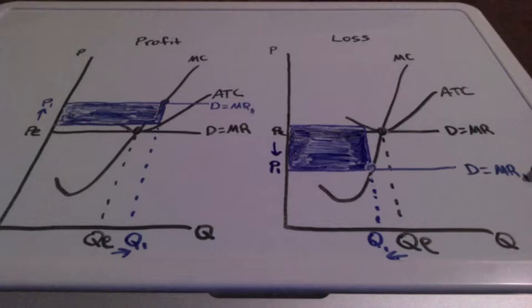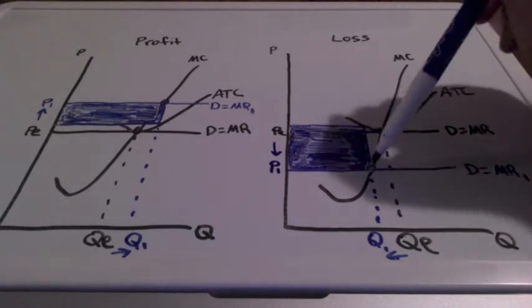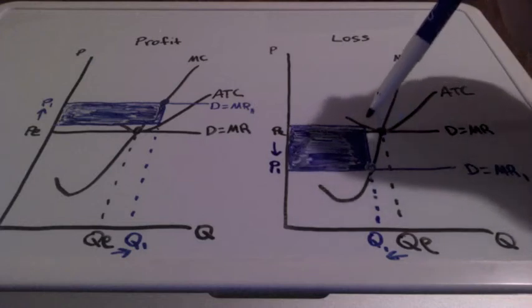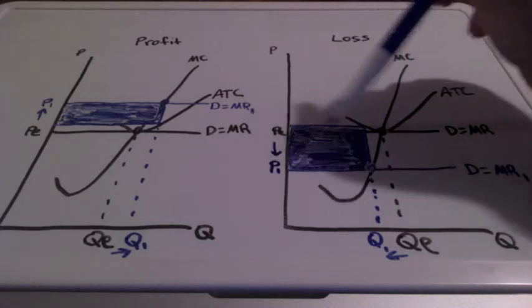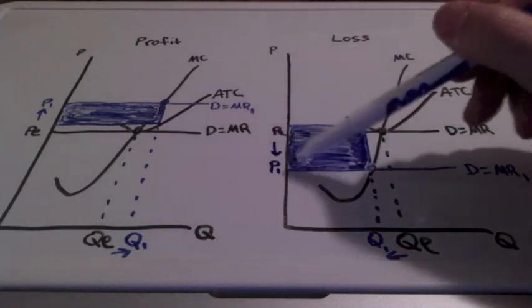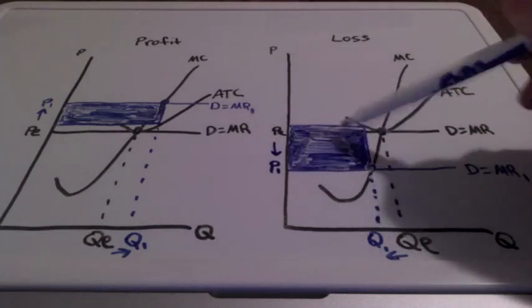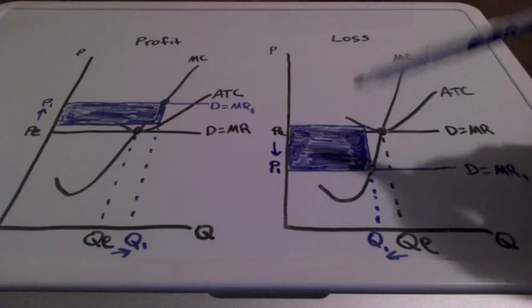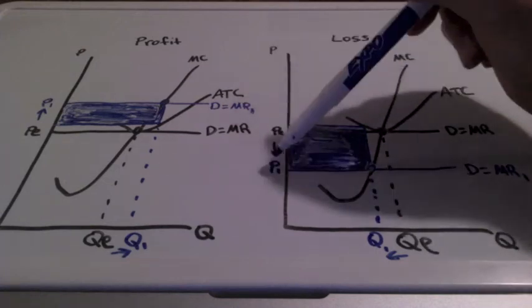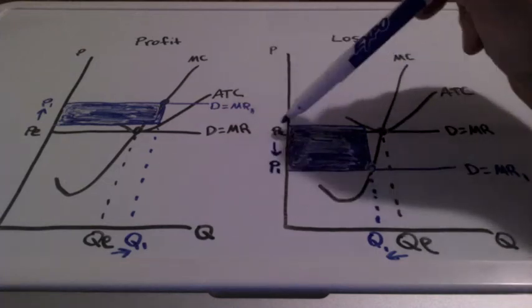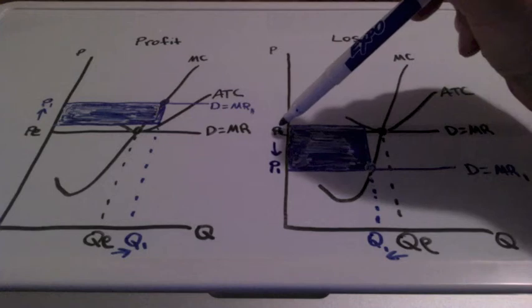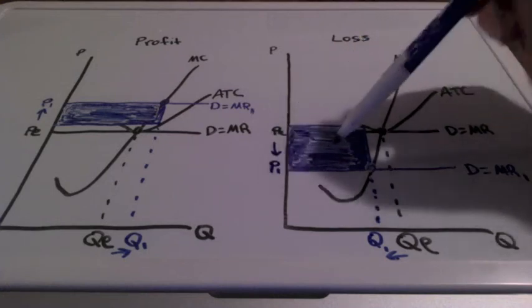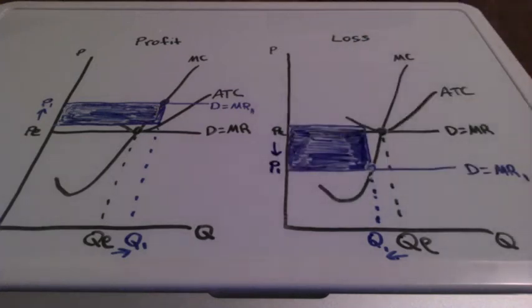We have a new demand and marginal revenue line. We find where marginal revenue equals marginal cost. We bring this all the way back up to where it touches average total cost and back over. We shade this entire area in blue. And because our new price is below our equilibrium price, we're showing that the firm is experiencing losses.